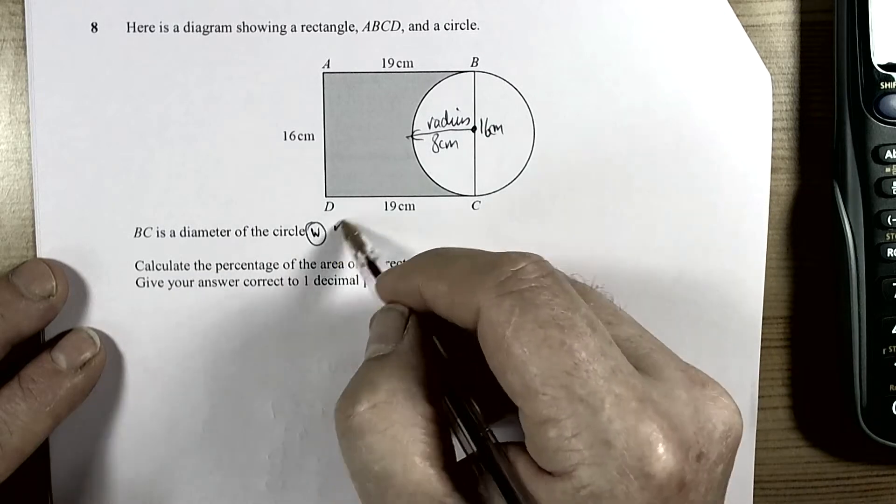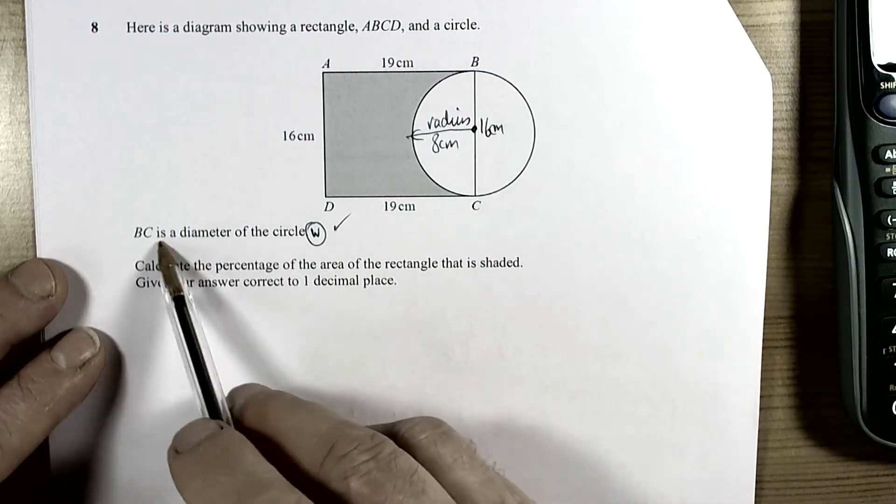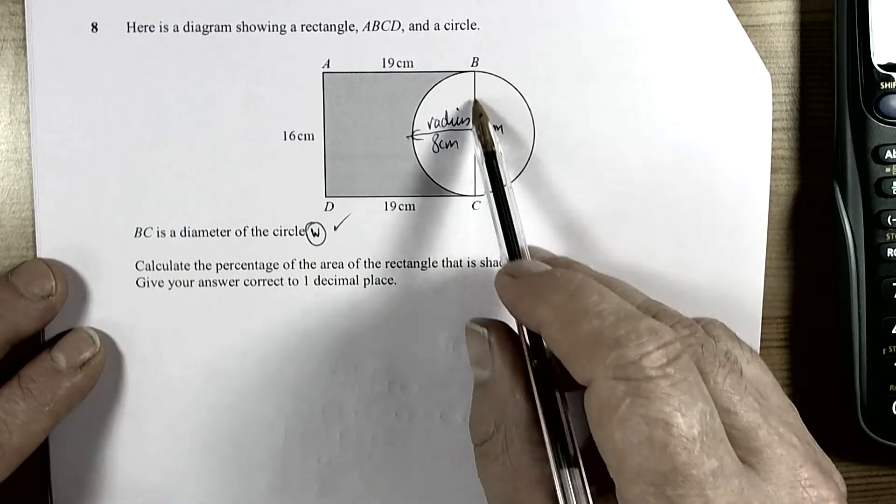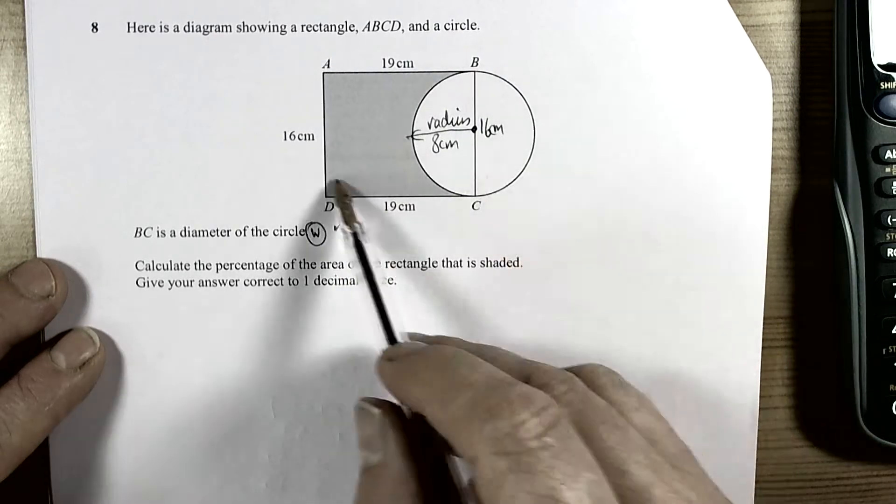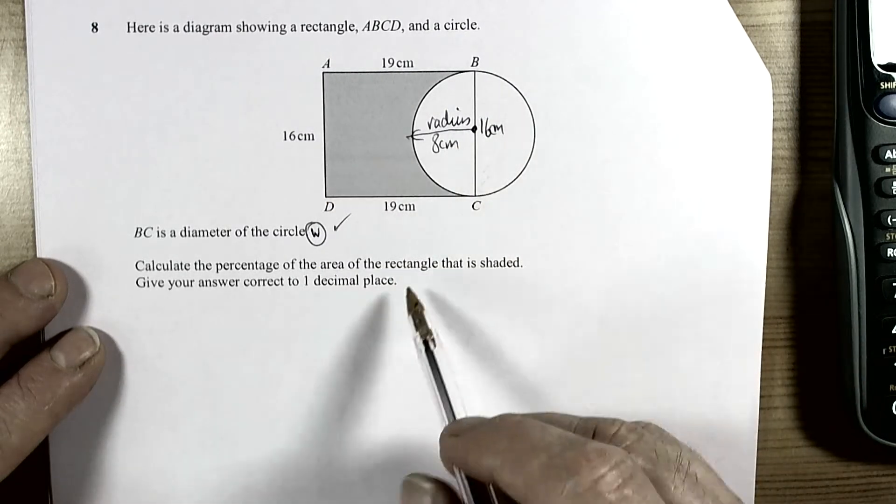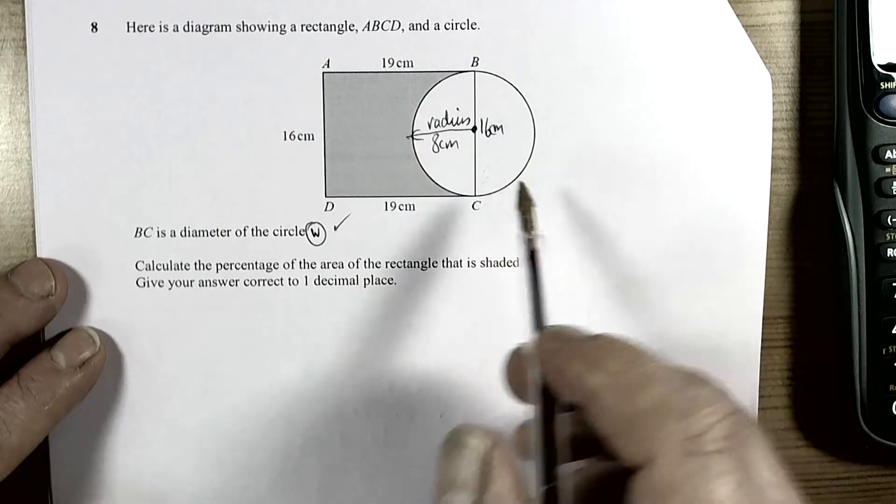We're looking at the information, ticking off what we're doing as we do it. So BC is the diameter, it's got to be the same as 16cm because it's the same side length opposite to the rectangle, and therefore the radius of the circle is 8.